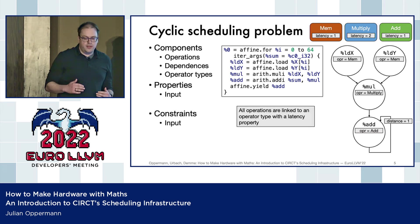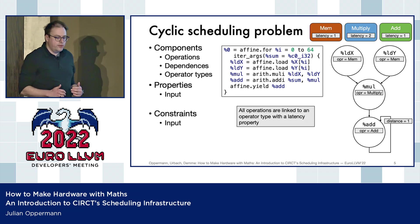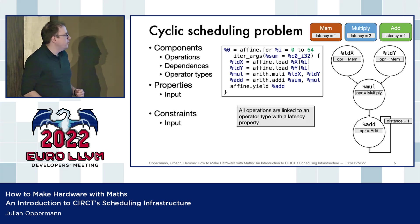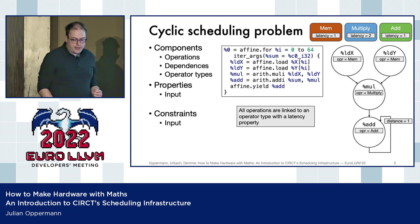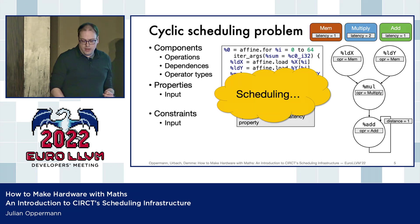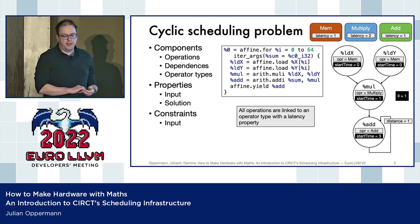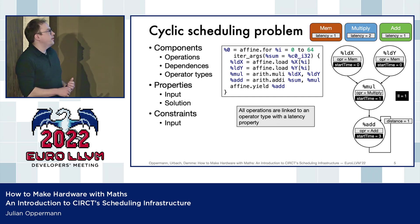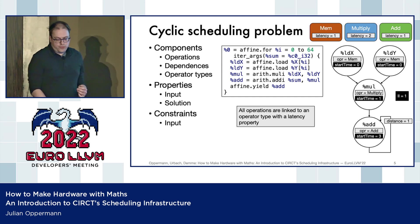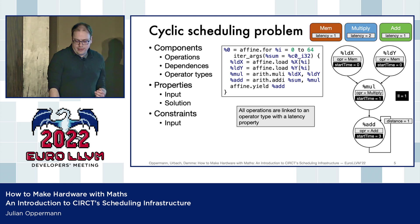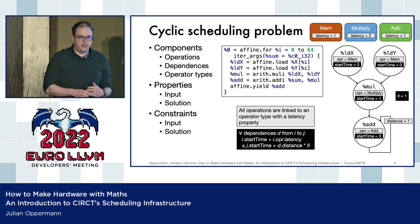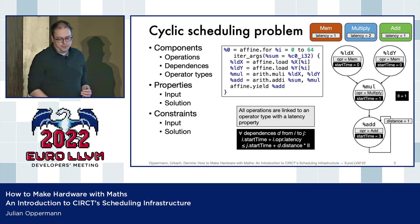An important concept here is that we have constraints for these input properties, where we check that everything is present and valid. We can then invoke a scheduler and get solution properties — in this case, start times for the individual operations — and of course we also want to check and have constraints for the solution.